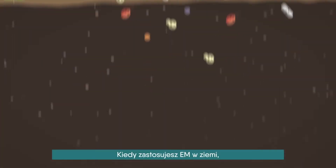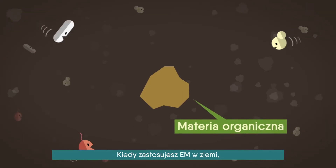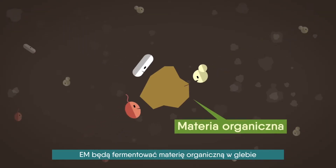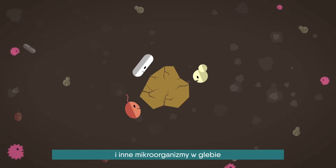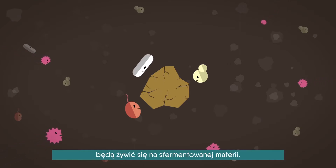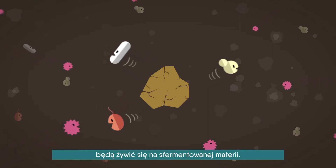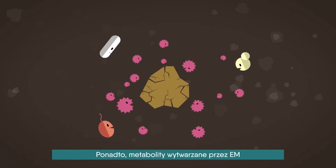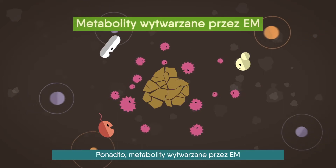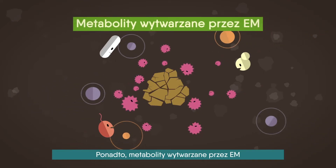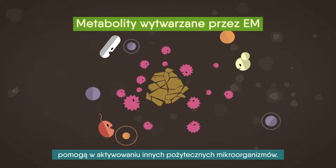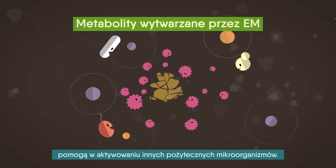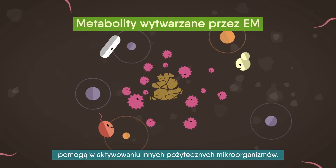When you apply EM on the ground, EM will ferment organic matter within the soil and other microorganisms in the soil will feed on the fermented matter. Also, metabolites produced by EM will help activate other beneficial microorganisms.